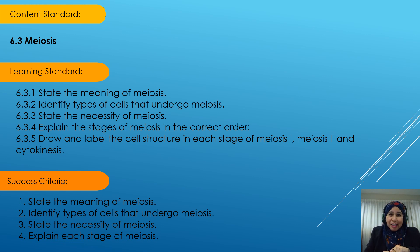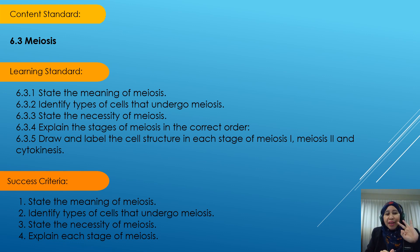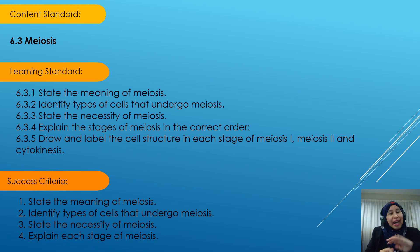The success criteria for today's lesson are: first, state the meaning of meiosis; second, identify types of cells that undergo meiosis; third, state the necessity of meiosis; and fourth, explain each stage of meiosis.